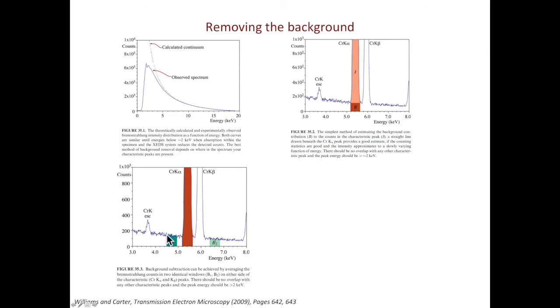In the second approach, you draw two boxes, one before the peak, the other after the peak. You take the average, and it will be the background. You use the total intensity, subtract the background to get the actual intensity.